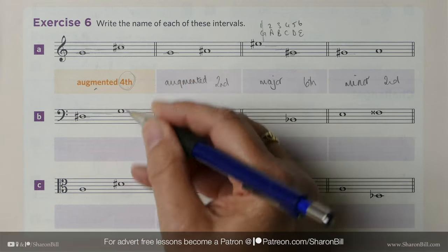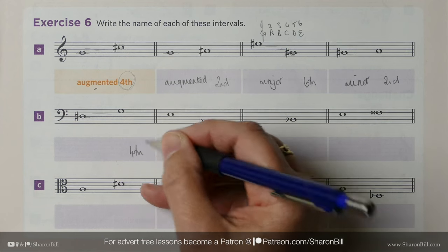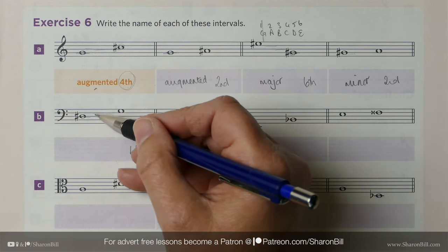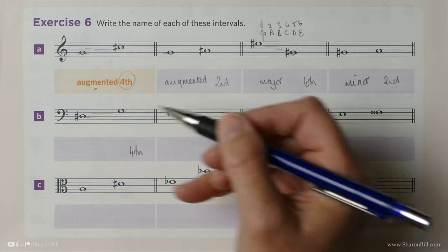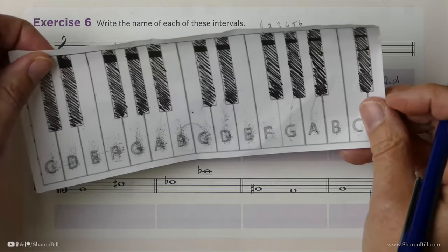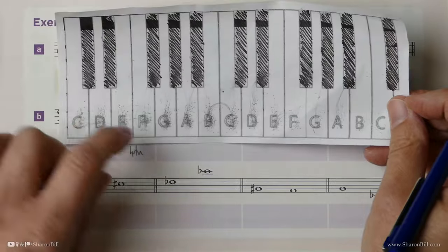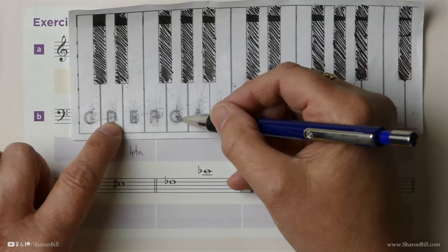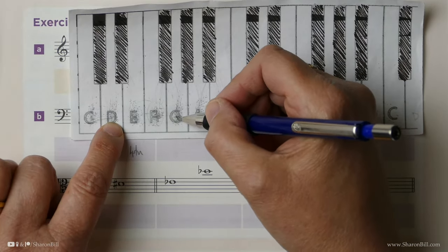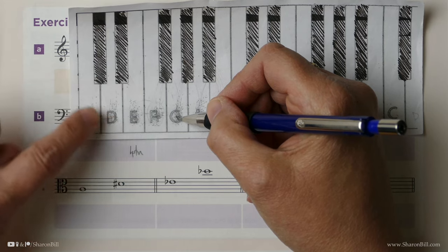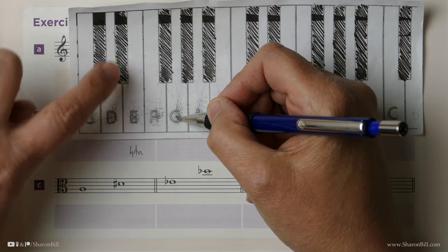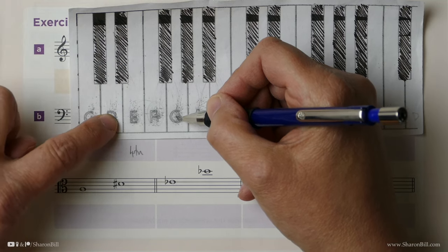So let's work through these together now. This is a 1, 2, 3, 4th of some sort. D, E, F, G. Now we know that D to G is a perfect 4th, but the lower note has been raised. It's been made smaller, and so we've made it diminished, haven't we?